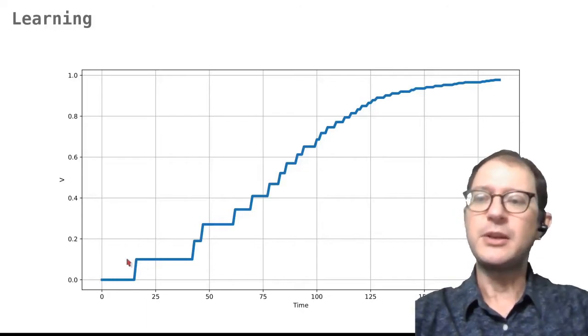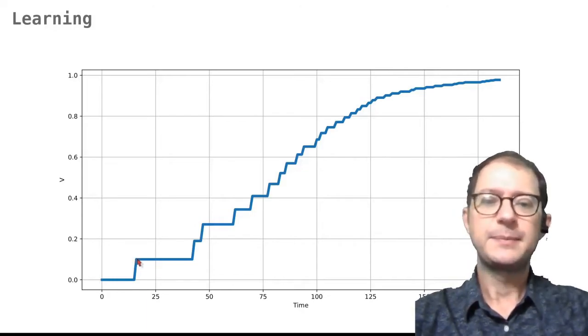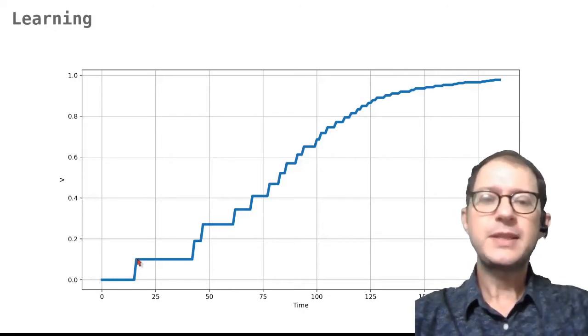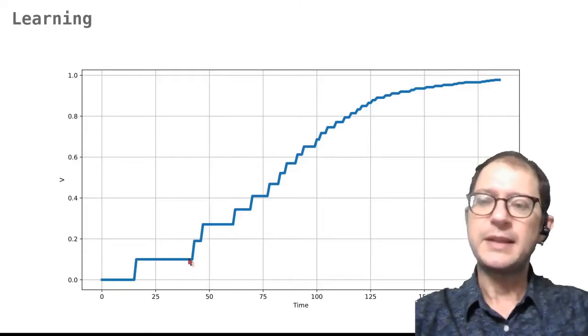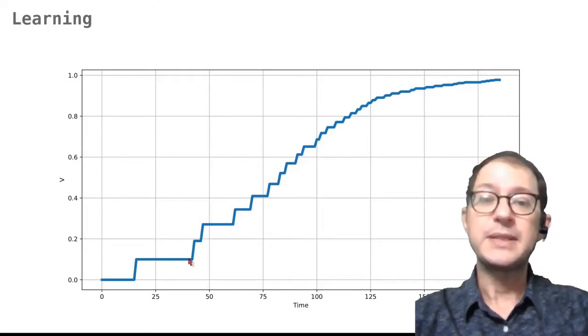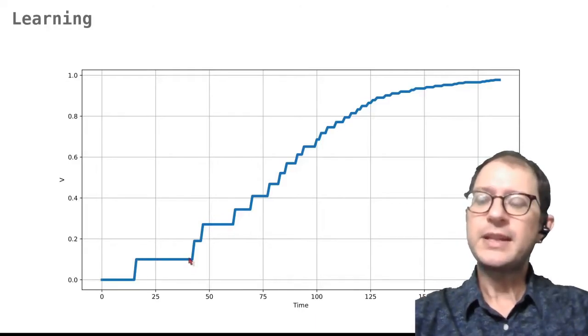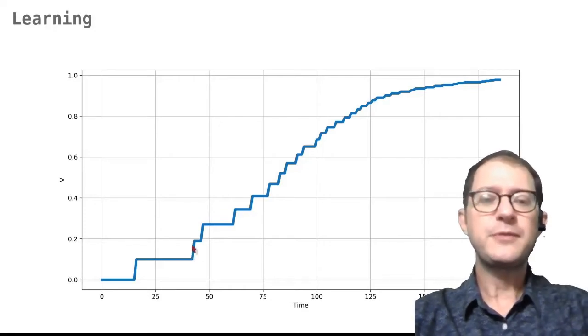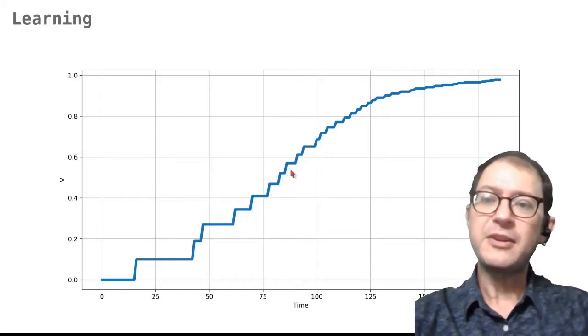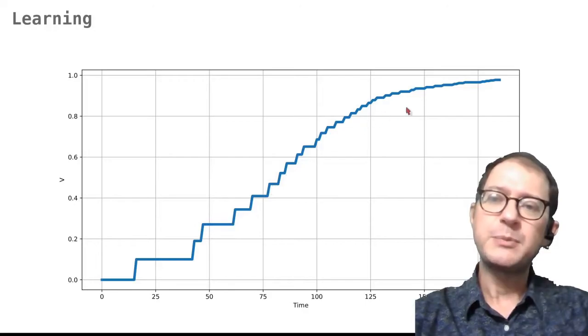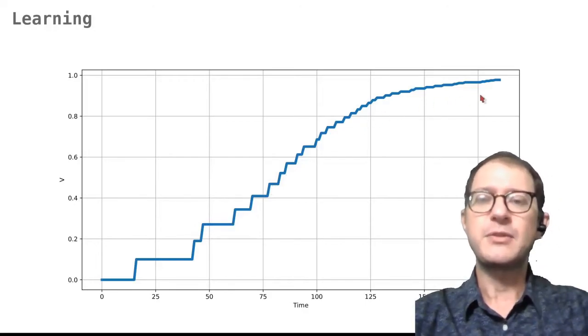After this first jump, the probability of choosing the action is still low, is about 10%, because the associative strength is still 0.1. So some time passes before the animal actually tries the response again, and during this time again nothing happens. But when the action is tried again, there is another jump. After the first few responses, the associative strength has grown enough that the response is tried out regularly, and from there on learning proceeds pretty smoothly, more or less like in the Rescorla-Wagner model.